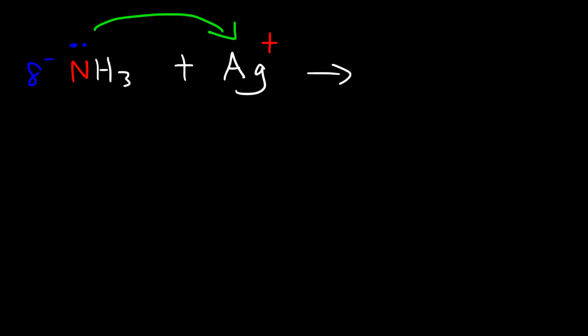Once again, nitrogen is going to donate a pair of electrons. It's acting as the Lewis base. Silver is the Lewis acid. But in this example, we have a metal-ligand interaction. You can draw the product like this or write it as AgNH3+. This bond is a coordinate covalent bond.